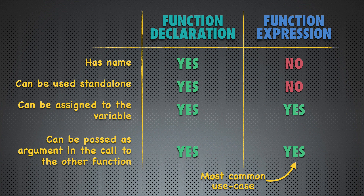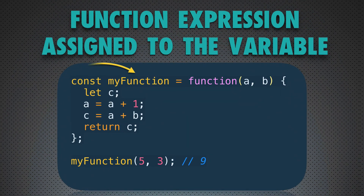Let's look at an example where a function expression is assigned to a variable. Here we declare a new variable called myFunction using const. It is recommended to use const when assigning an anonymous function expression to a variable. If you use let or var instead, you would be able to reassign the variable's value, and if you reassigned a number to it and then tried to call it, it would no longer be a function — you would get an error.